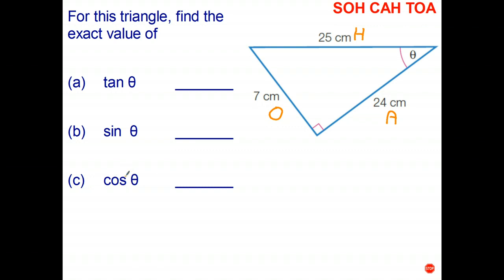So always start by identifying the three sides of the triangle. I might do C and then let you have a go at A and B. So I start by saying cosine is adjacent over hypotenuse.